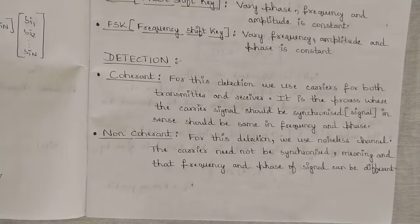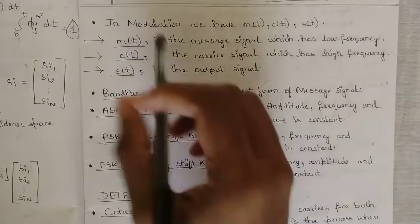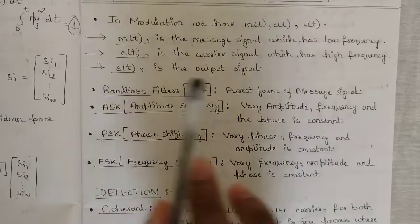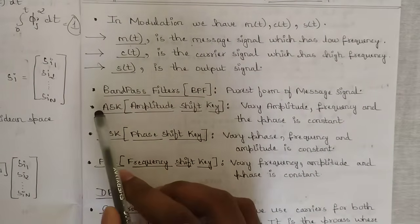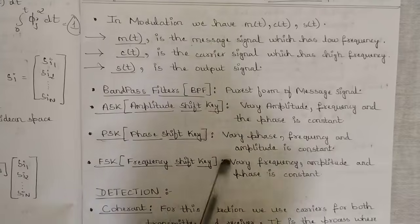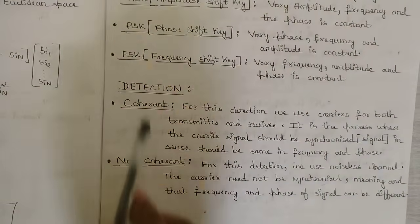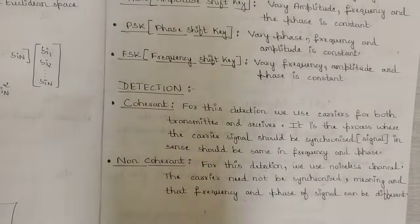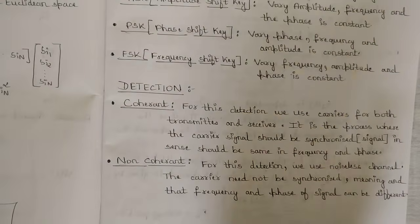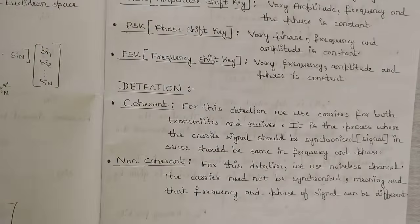To summarize this introductory video: we discussed the message signal, carrier signal, and output signal, as well as important parameters including band pass filters, ASK (Amplitude Shift Keying), PSK (Phase Shift Keying), FSK (Frequency Shift Keying), and the two detection categories — coherent and non-coherent detection. Please note down these definitions as they will be used throughout the upcoming topics. We will see more concepts in the next video.